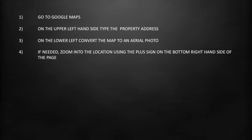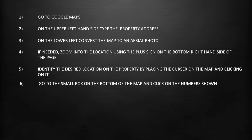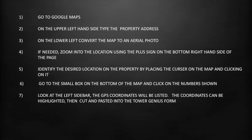Number four, if needed, zoom into the location using the plus sign on the bottom right hand side of the page. Number five is to identify the desired location on the property by placing the cursor on the map and clicking on it.